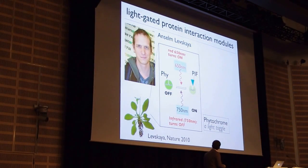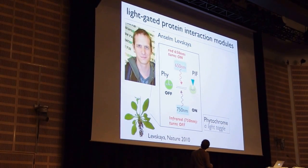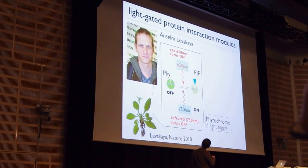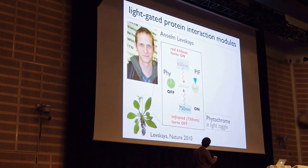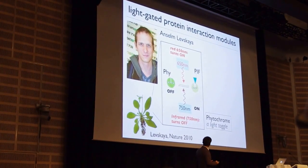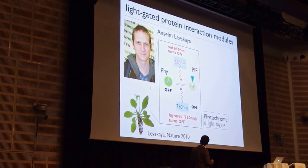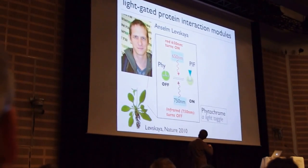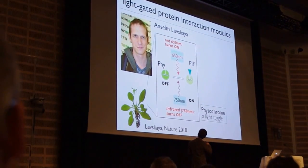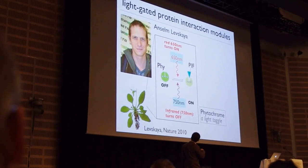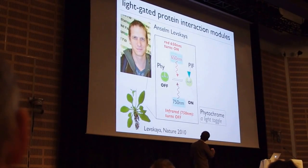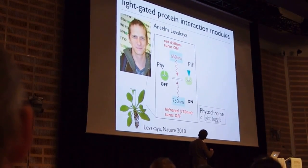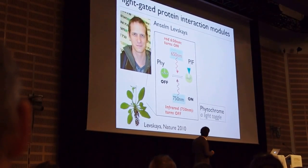So how do we get controls? The first thing is I'll tell you about a light-gated protein interaction module. There are several now that are out there that people are working on, and we have work on this one that Anselm started working with, which is from Arabidopsis. It's the Phytochrome B PIF system. The key thing to remember is that this is a light-gated interaction module — it's essentially a light toggle.